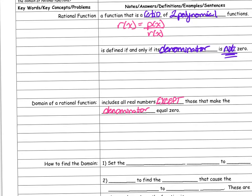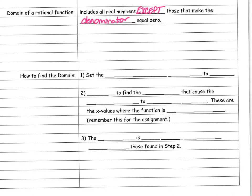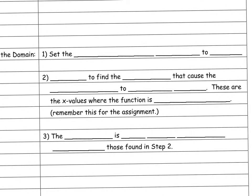That gives us the clue on how to find the domain. There are three steps. Step one: set your denominator equal to zero — just take the bottom part of your fraction and set it equal to zero.